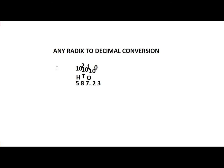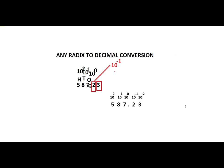The digits after the radix point follow decreasing powers. This point is called the radix point. After the radix point we use 10 power minus 1, which is the one-tenth position, and then 10 power minus 2, which is the one-hundredth position. The powers keep increasing negatively. This is very fundamental to understand for any radix to decimal conversion.